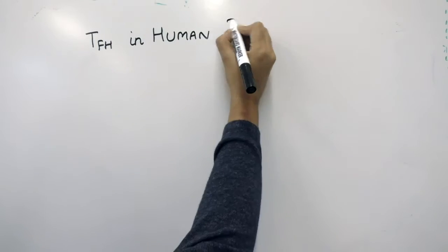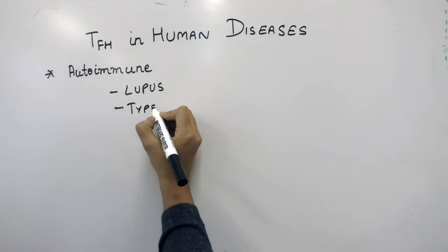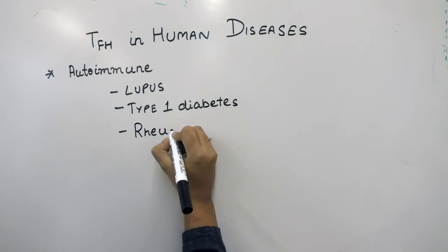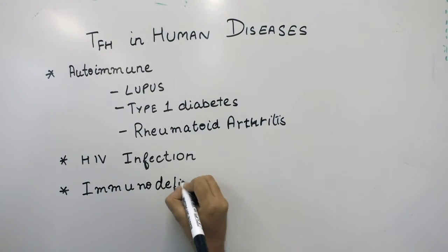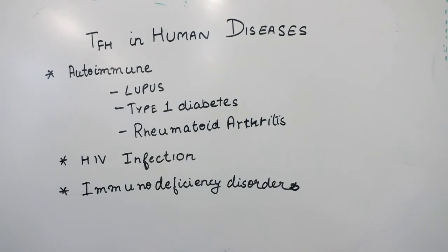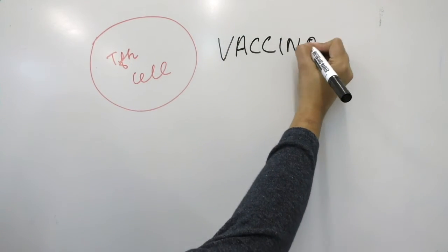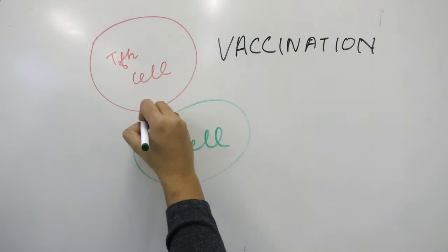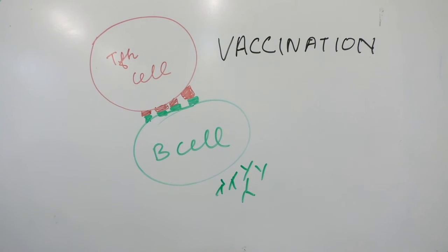Aberrant TFH responses have been implicated in autoimmune diseases, for example lupus, type 1 diabetes, and rheumatoid arthritis. They have also been implicated in HIV infection and other immunodeficiency disorders. Recently, TFH cells are being studied in vaccination for boosting B cell responses to produce high-affinity antibodies. These studies specifically focus on vaccines against HIV infection.